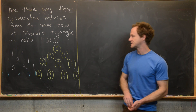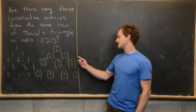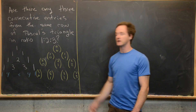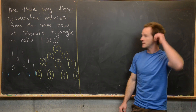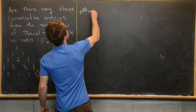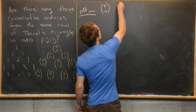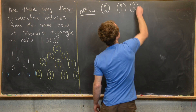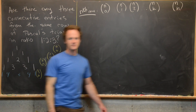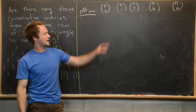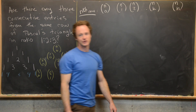We can also write Pascal's triangle via binomial coefficients. The first row is just 0 choose 0; the second row is 1 choose 0 and 1 choose 1; the third row is 2 choose 0, 2 choose 1, and 2 choose 2, and so on. That means the nth row looks like n choose 0, n choose 1, n choose 2, up to an arbitrary entry n choose k, all the way to n choose n. Note n choose 0 equals 1, n choose n equals 1, and n choose 1 equals n.